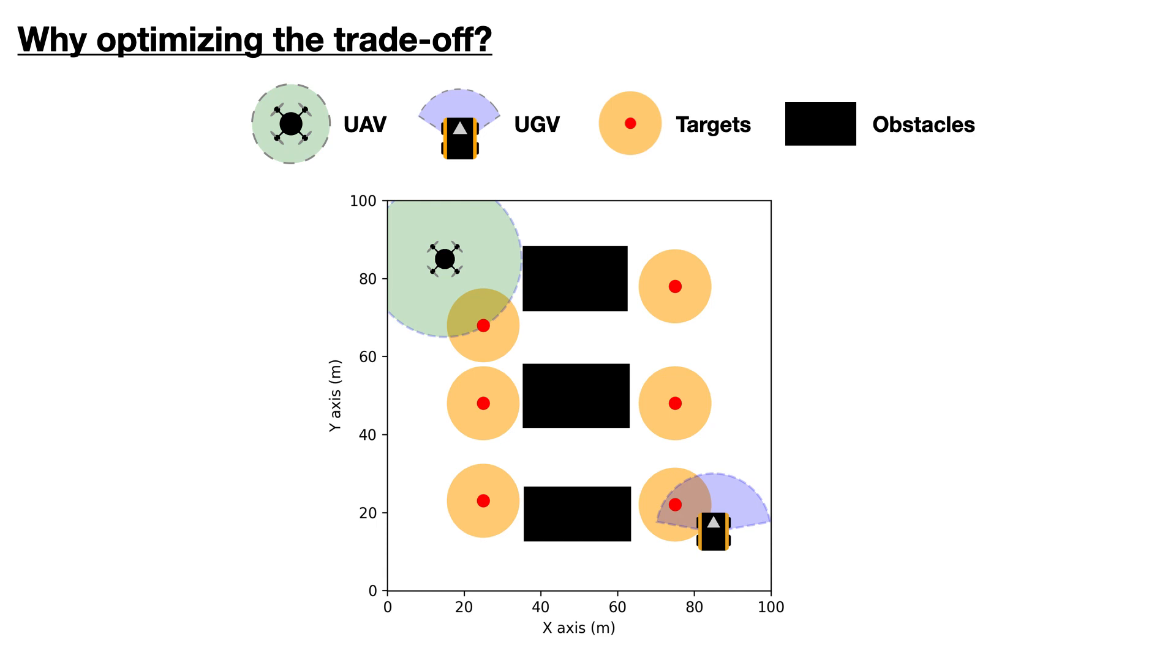Here we have an aerial vehicle and a ground vehicle with different fields of view, shown in green and blue, trying to reduce uncertainty of static targets whose mean positions are shown in red and their uncertainty shown in orange.